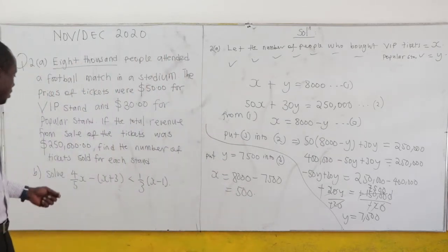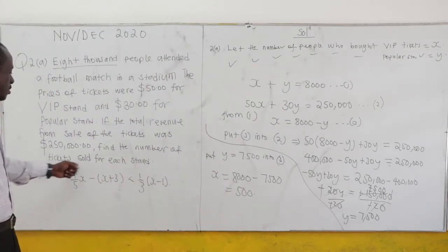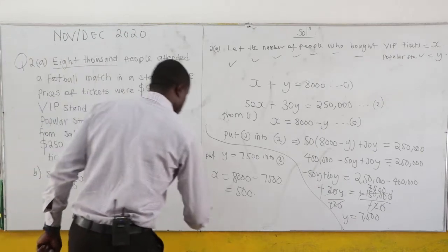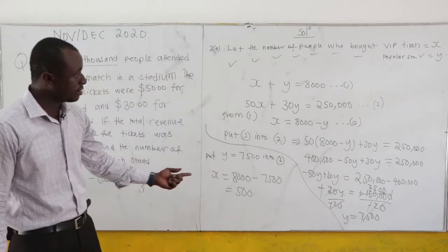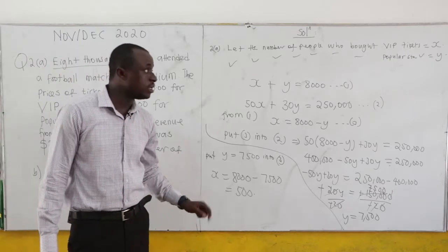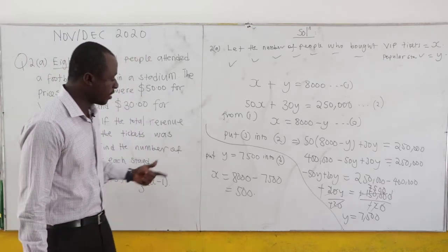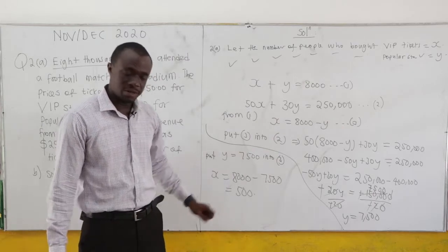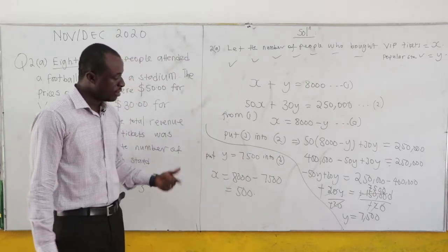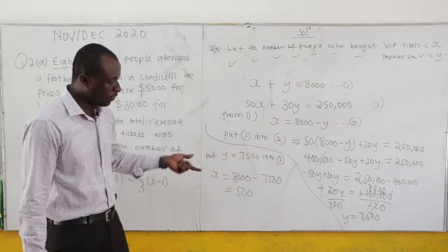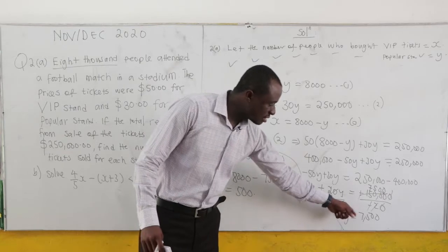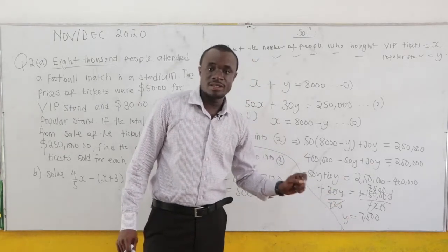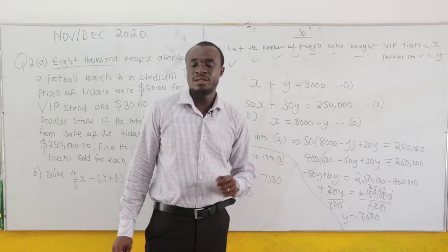The question says find the number of tickets sold for each stand. So we can clearly conclude that the number of tickets sold for the VIP stand is 500, and the number of tickets sold for the popular stand is 7,500. We have to state this in our answer sheet.